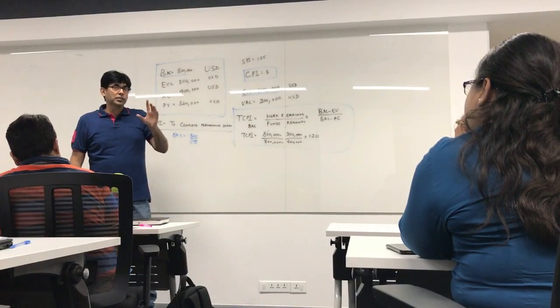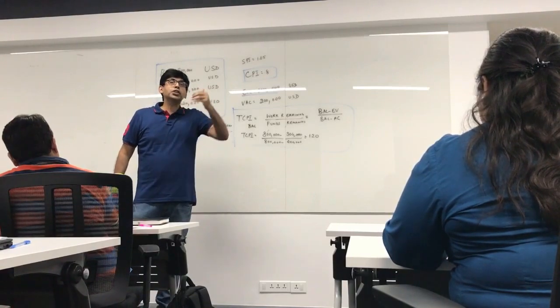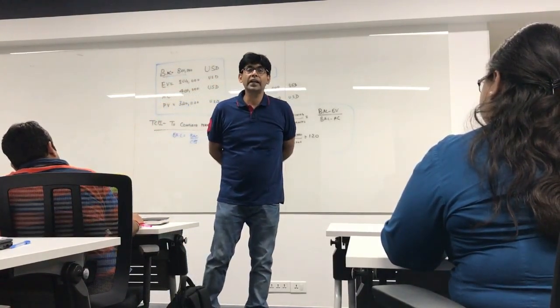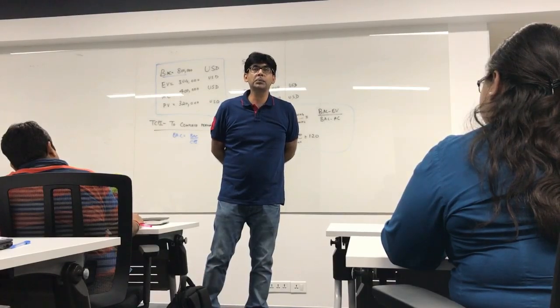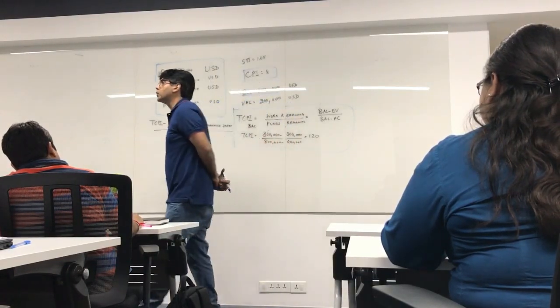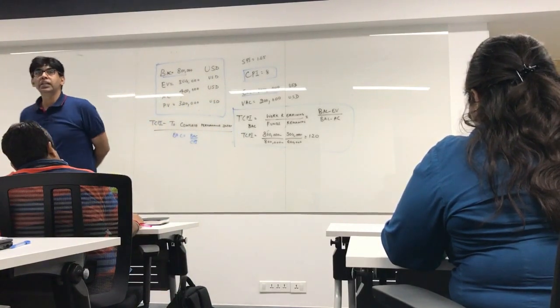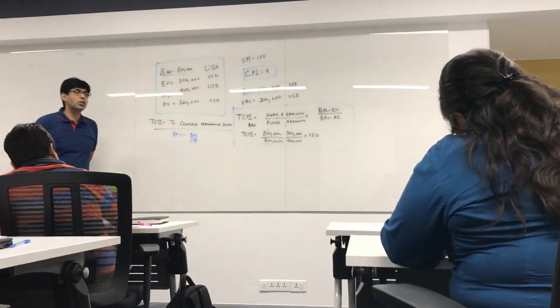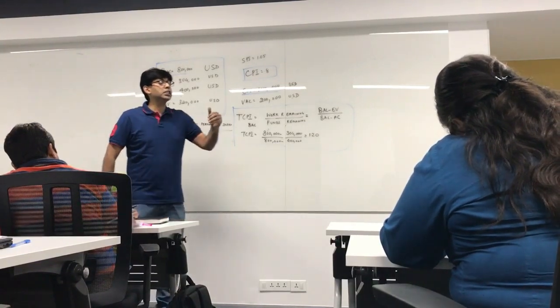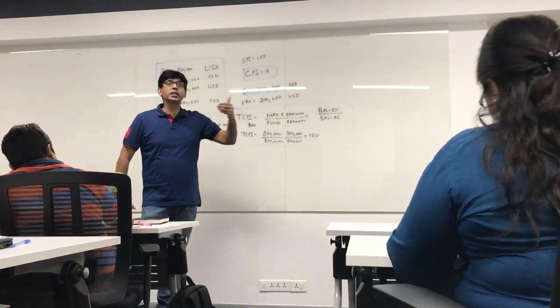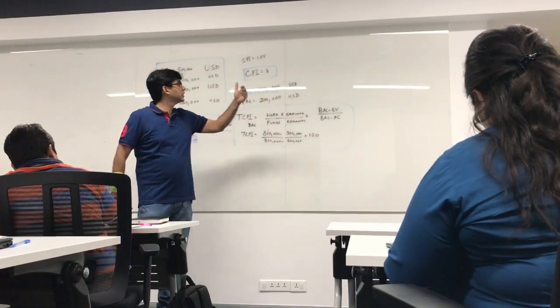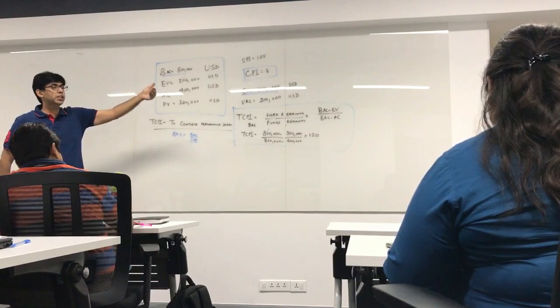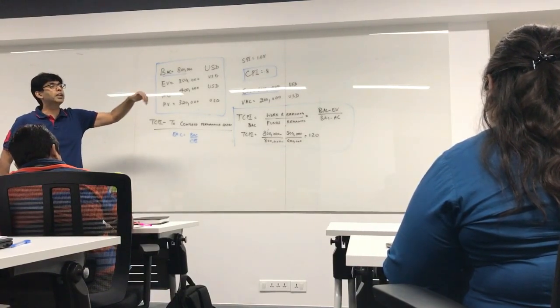Now, knowing how much I have to improve in terms of cost performance index, I need to calculate TCPI. TCPI stands for to complete performance index. It is the cost performance index at which I have to perform to hit the target budget of BAC. This is BAC based TCPI. Now, let us see how we can find it out.